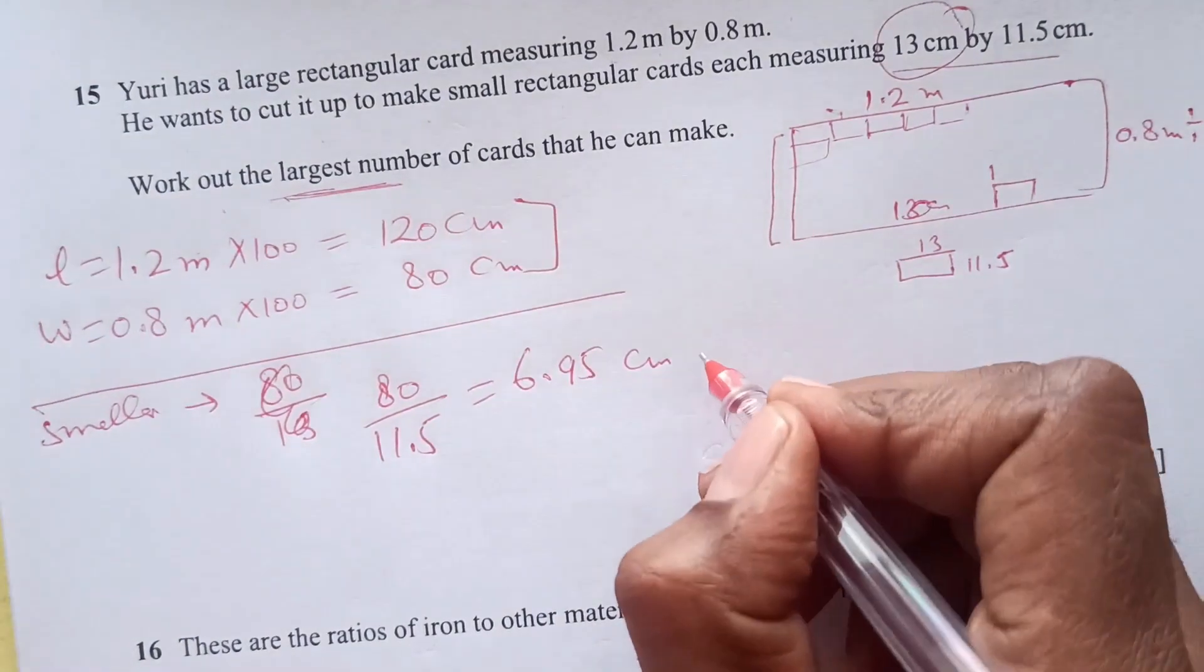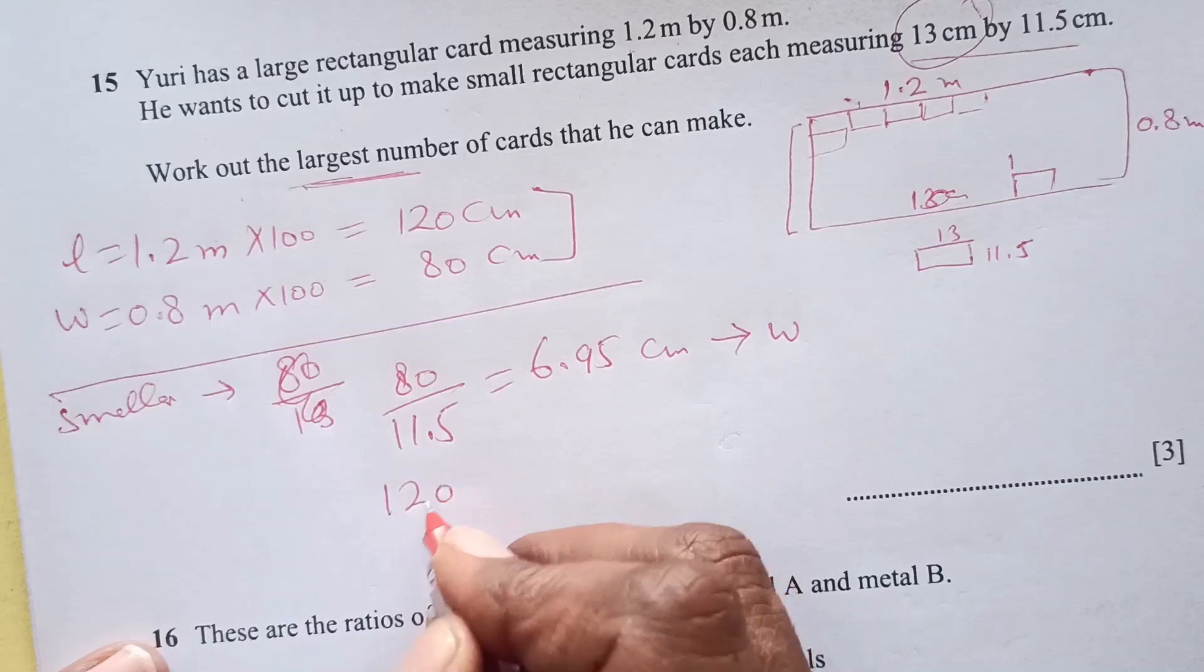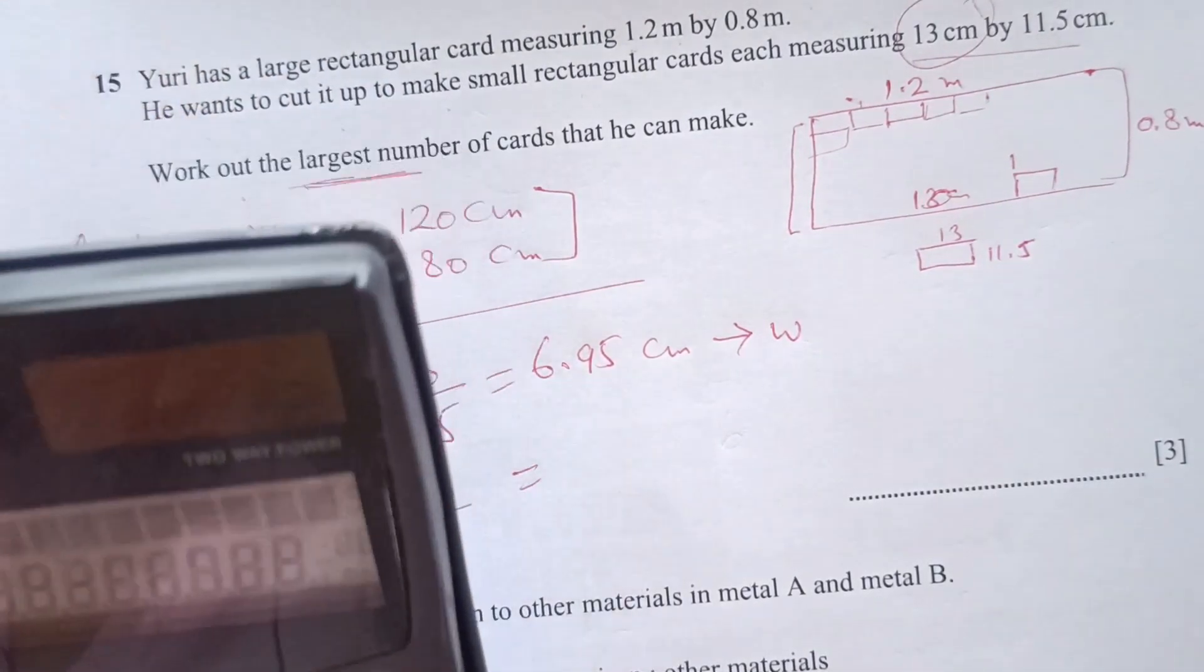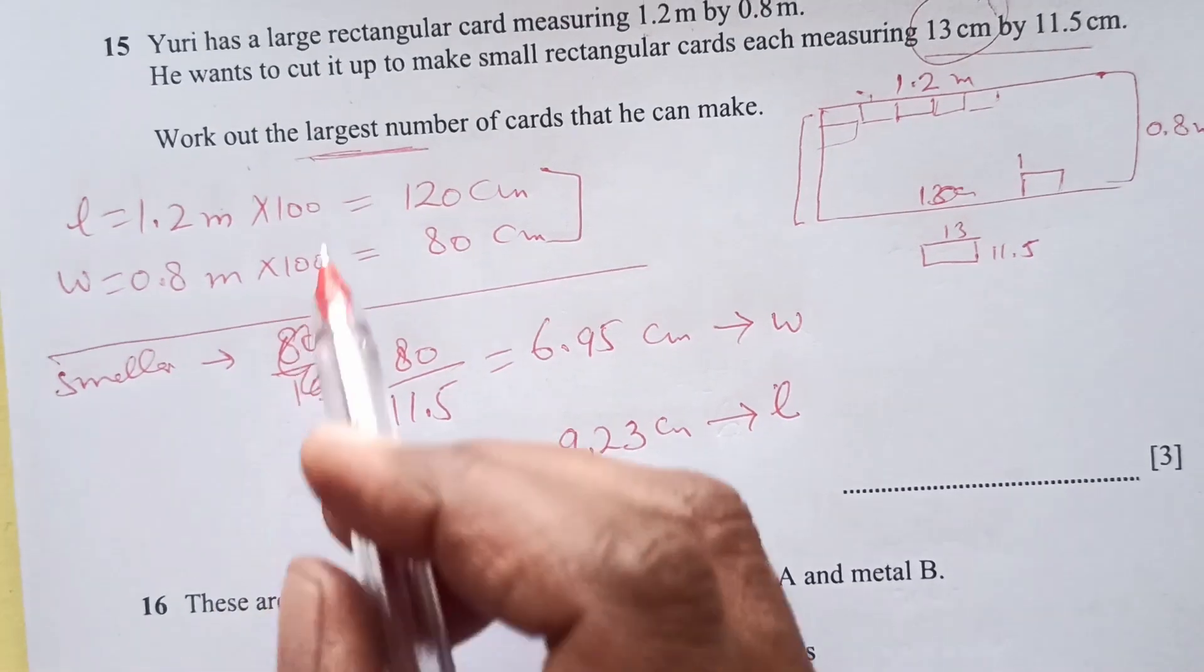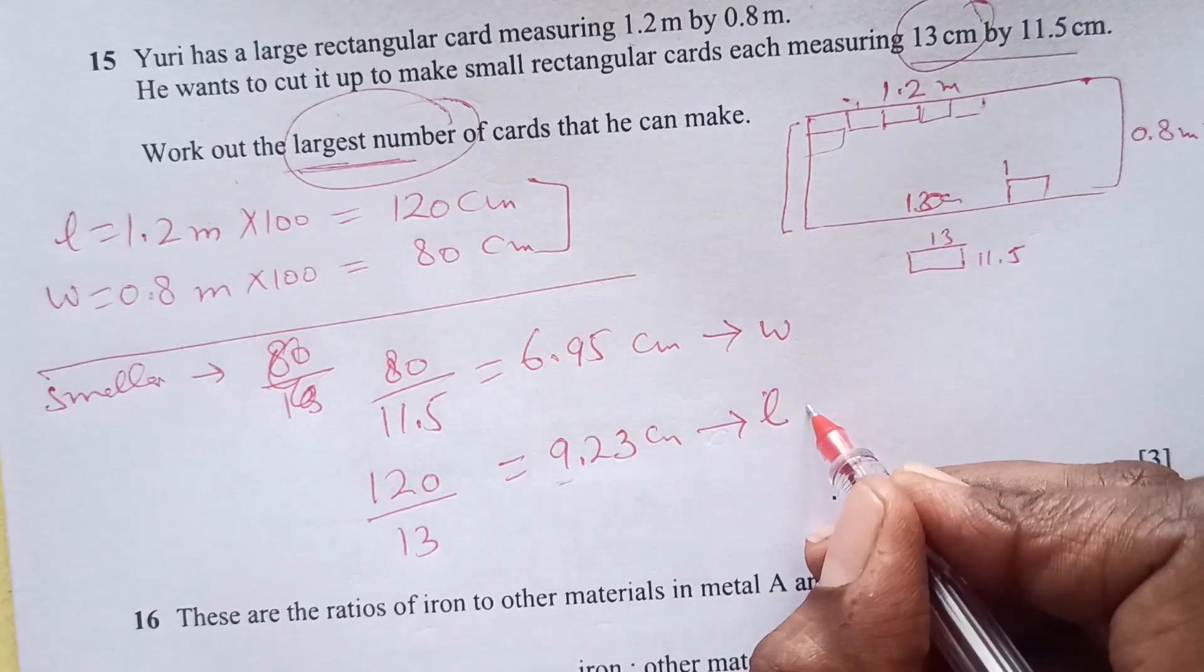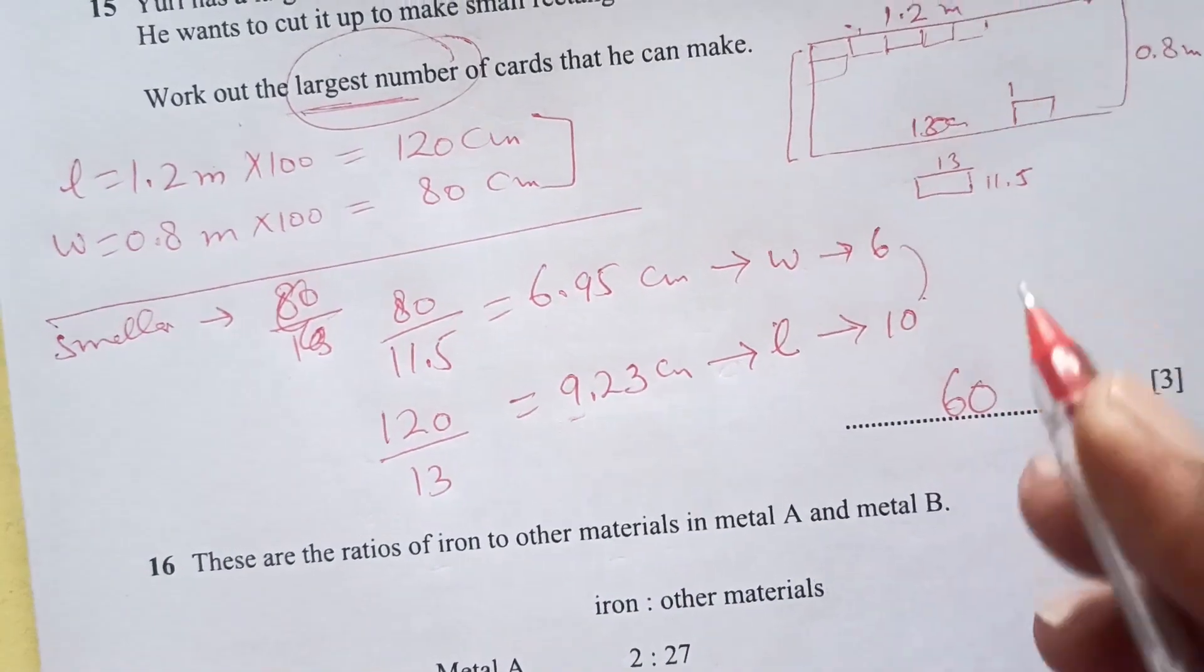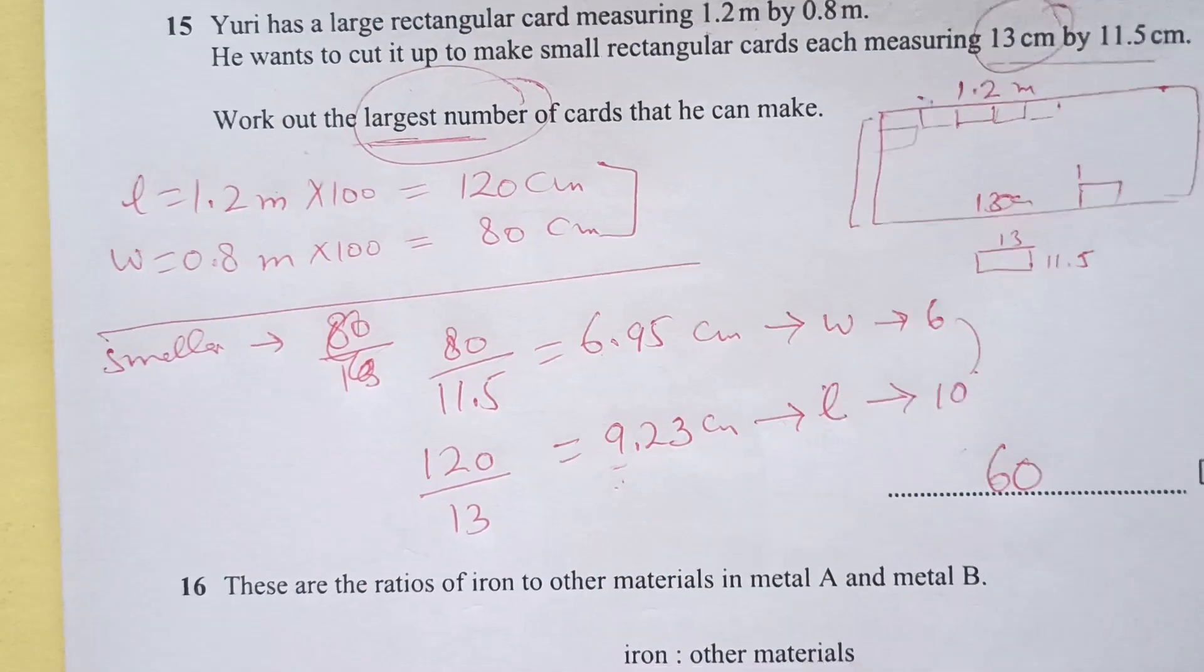Now the smaller one. For the smaller one, 80 divided by 11.5 is 6.95. This should be the width. And for the length, 120 divided by 13 is 9.23. We are looking for the largest number. If we make this 10 and 6, we can round one up and one down. 6 times 10 should be 60. Maximum number that can be made is 60.